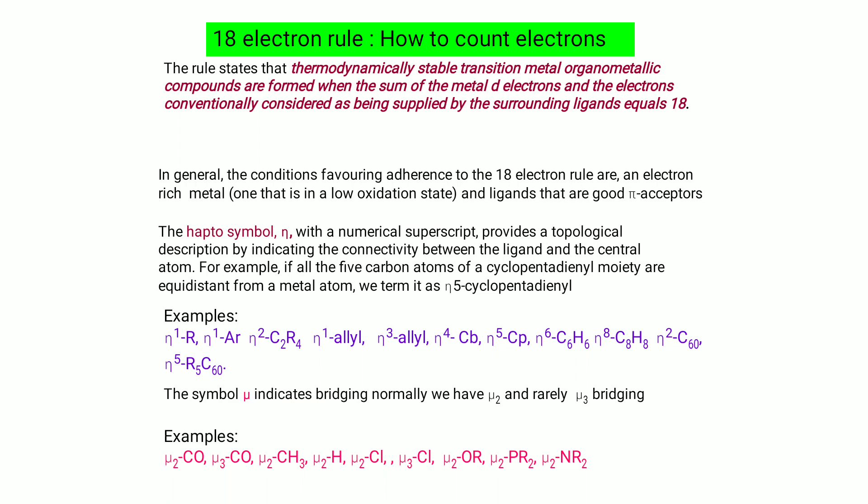Examples of hapto ligands include: η¹ R, η¹ aromatic, η² C₂R₄, η¹ allyl, η³ allyl, η⁴ Cp, η⁵ Cp, η⁶ C₆H₆, η⁸ C₈H₈, and η² C₁₆. The symbol mu (μ) indicates bridging — normally μ₂ and rarely μ₃. Examples include μ₂-CO, μ₃-CO, μ₂-CH₃, μ₂-H, μ₂-Cl, μ₃-Cl, μ₂-OR, μ₂-PR₂, and μ₂-NR₂.